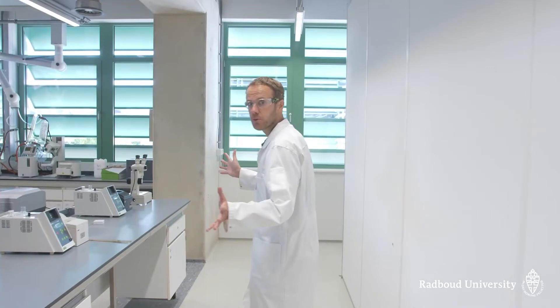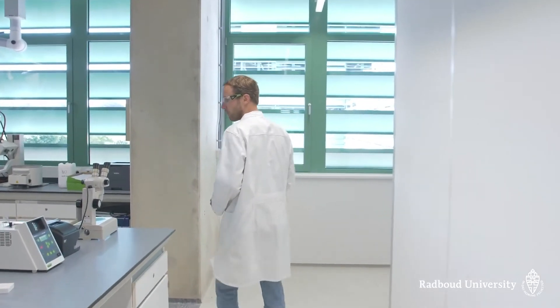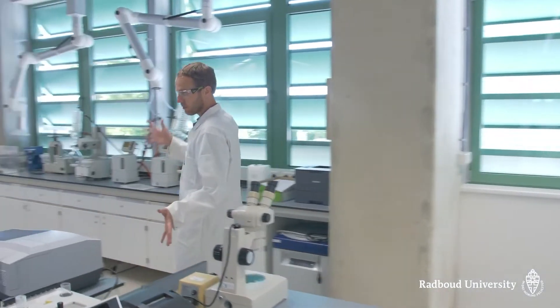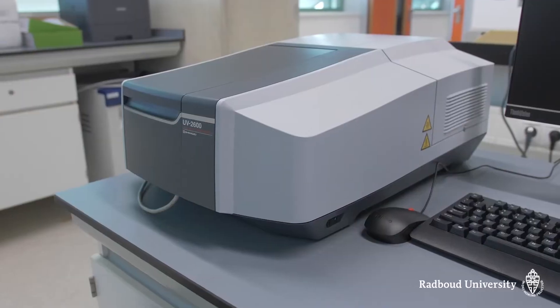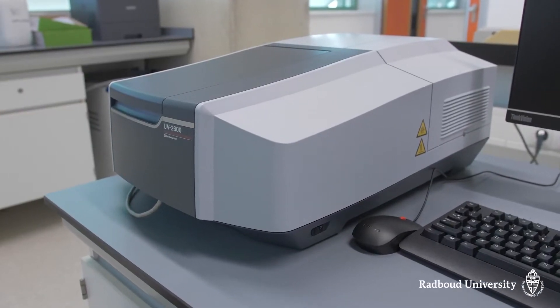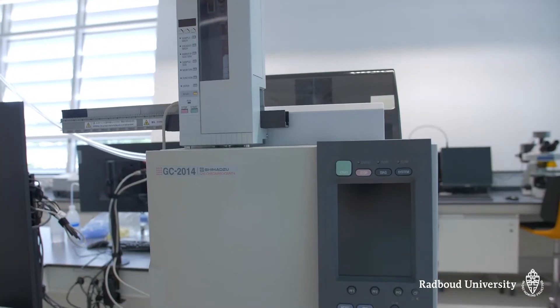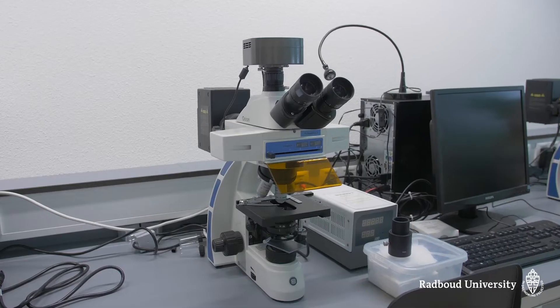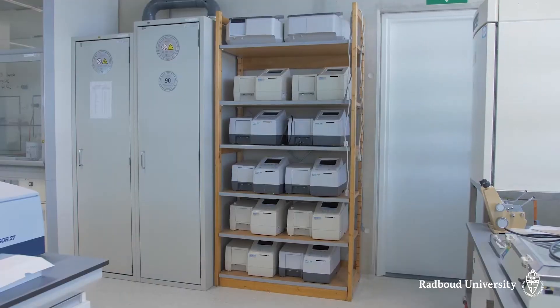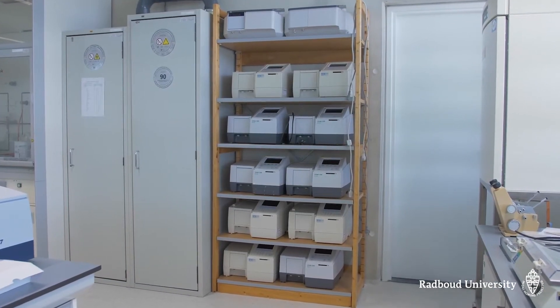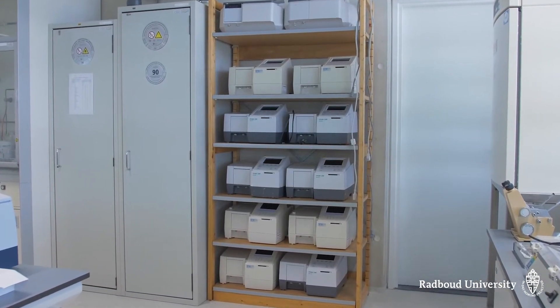As you can see here, this is the measurement room where our students do their more advanced measurements on the UV spectrometer for instance, the rotary evaporators, gas chromatographs, fluorescence microscopes. If you compare our equipment to a research department where they have one or two UV spectrometers, we typically have 40, which enables all students to get hands-on experience with the equipment.